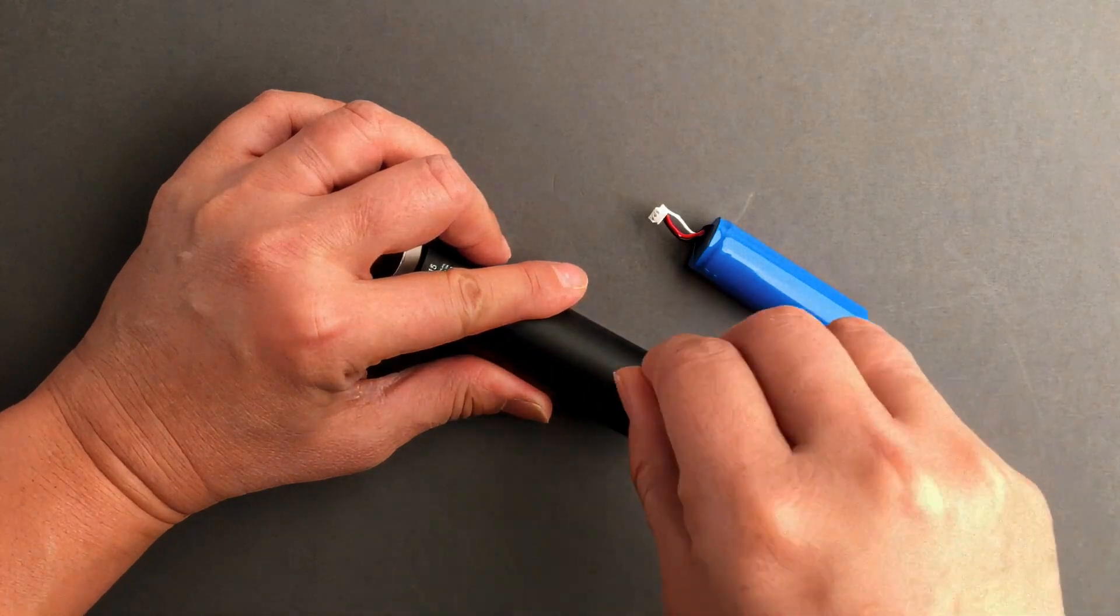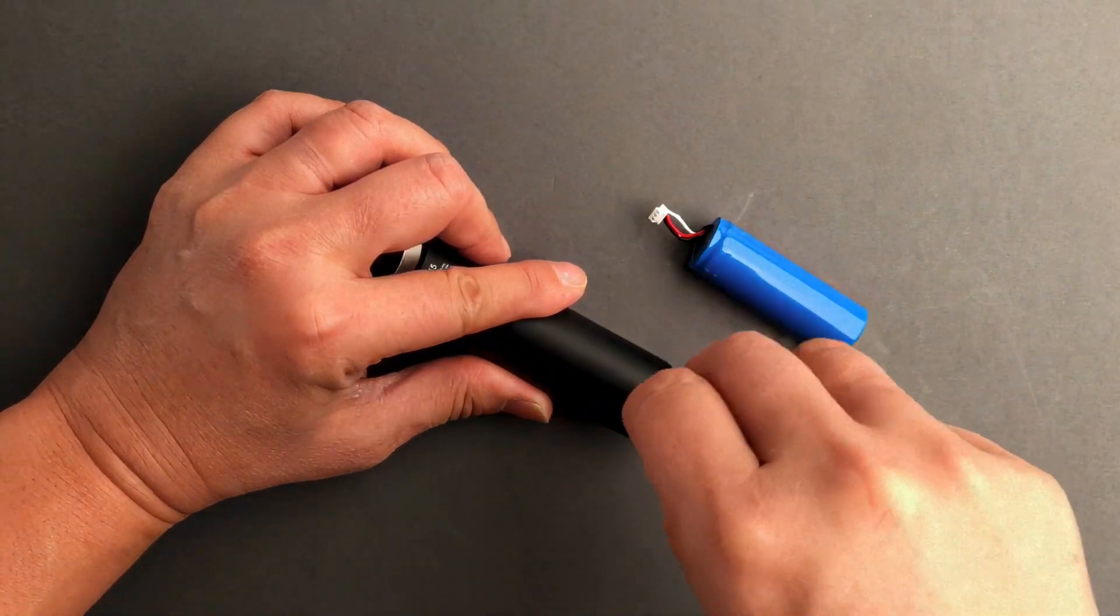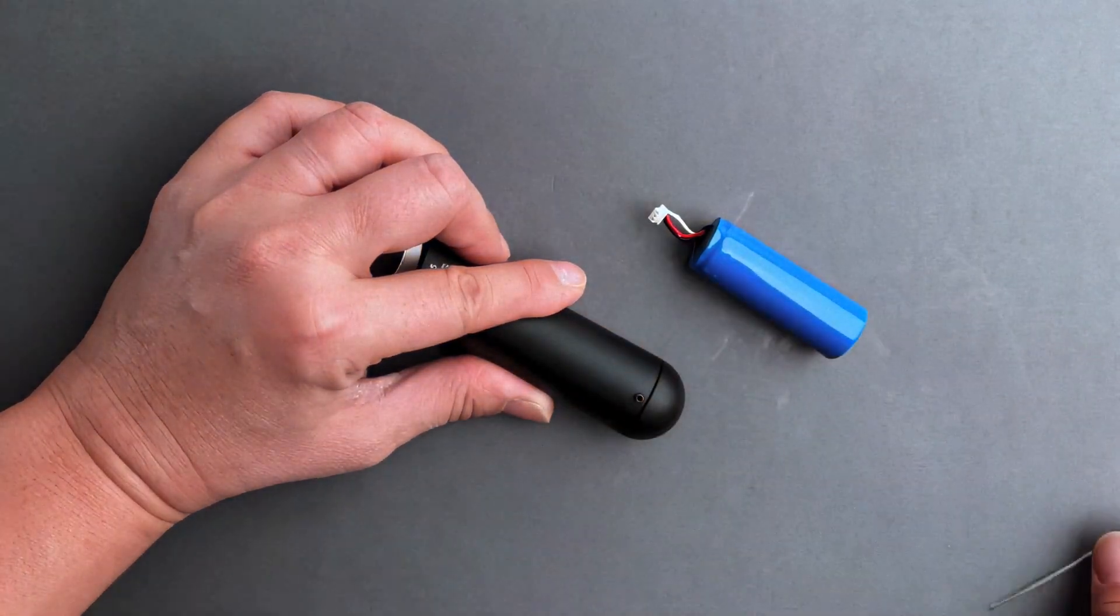Then using the Allen key, you'll loosen the set screw that holds the battery cap in place. It's not necessary to remove the screw completely.